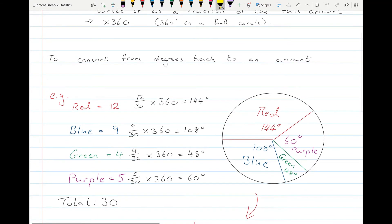In this first problem, red occurred 12 times, blue occurred 9 times, green 4 times, and purple 5 times, and we want to represent this in a pie chart. So all together there was 30 selections, we'll say, or colors.